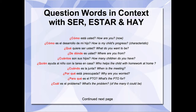¿Cuándo es la junta? — When is the meeting? ¿Por qué está preocupada? — Why are you worried? The two words por qué mean for what, or why. ¿Por qué está preocupada? ¿Para qué es el PTO? — What's the PTO for? The parent-teacher organization. ¿Para qué es el PTO? Here we're not saying why is it — we're saying what's the purpose of it. ¿Para qué?